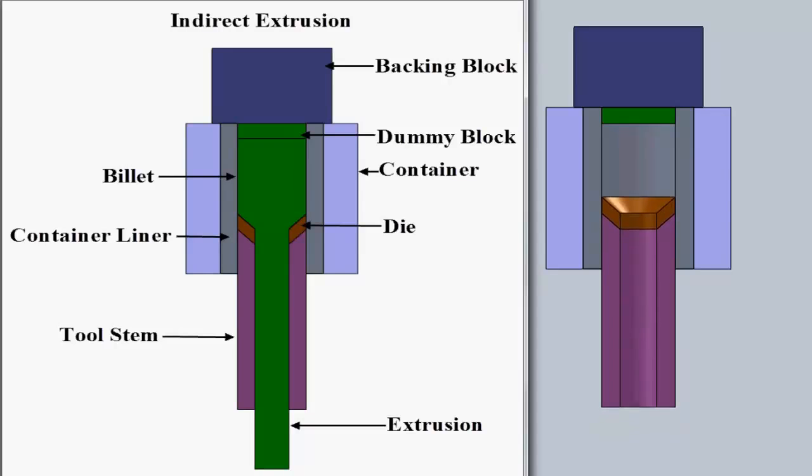One cannot obtain longer continuous extruded parts with this technique because the hollow die must be designed with sufficient strength to bear any bending regarding its lengthier size as it is pressed upwards all the way into the cavity of the container.